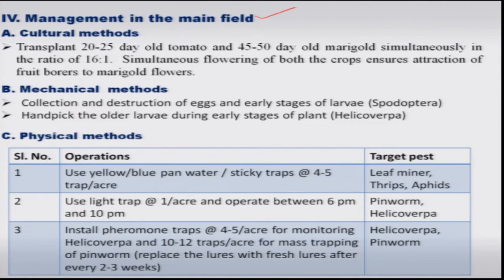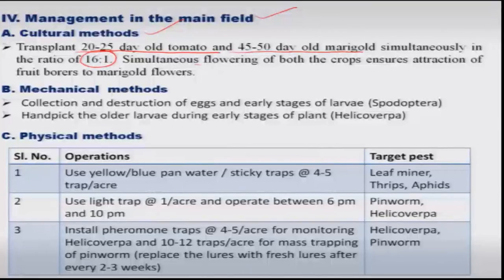In the main field, cultural methods include transplanting 20 to 25 day old tomato seedlings and 45 to 50 day old marigold simultaneously in a ratio of 16:1 — 16 rows of tomato followed by 1 row of marigold — so that both crops flower simultaneously. Helicoverpa prefers marigold for egg laying, so the high egg load on marigold flowers can be harvested and sprayed separately to effectively control Helicoverpa at the egg stage itself.